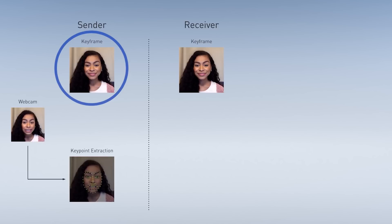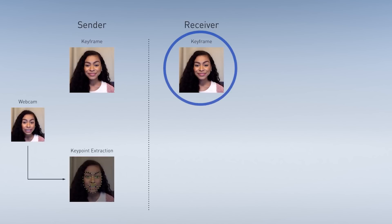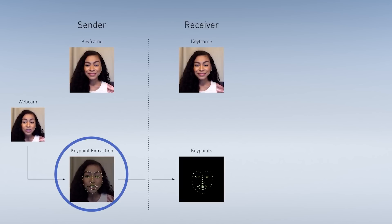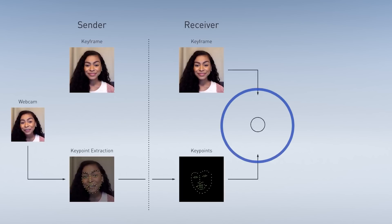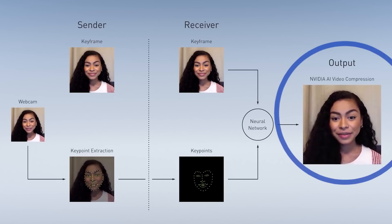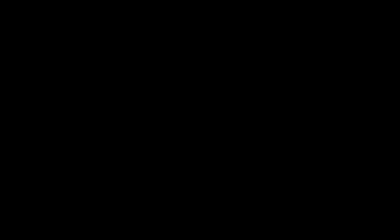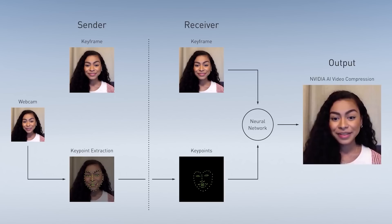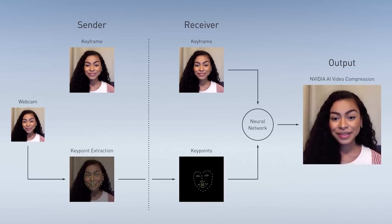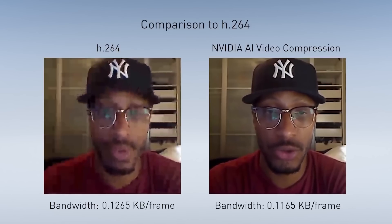Similarly, NVIDIA's AI first takes a snapshot of how your face looks and uses it as a base, just like the input image for FOM. Then, instead of using a driving video like FOM, an algorithm transfers live key points of your face, and with the help of a trained neural network, produces a video of you speaking in high resolution. Or, to sound more horrifying, the AI manipulates your face with just simple key points and can make you look like you are speaking naturally.